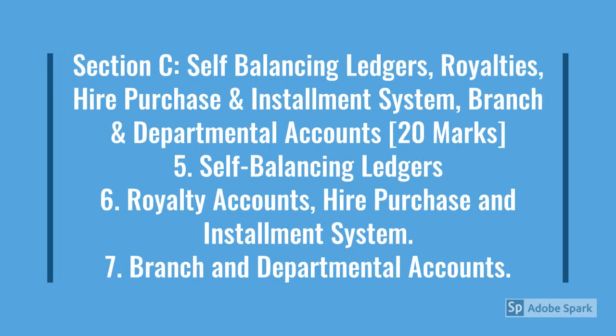Section C: Self-Balancing Ledgers, Royalties, Hire Purchase and Installment System, Branch and Departmental Accounts, 20 marks. Under this, divided into 3 parts: 1. Self-Balancing Ledgers, 2. Royalty Accounts, Hire Purchase and Installment System, and 3. Branch and Departmental Accounts.